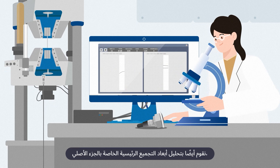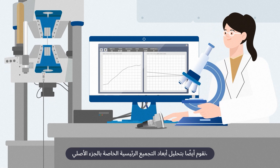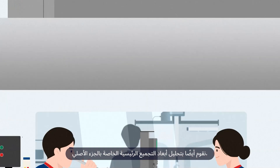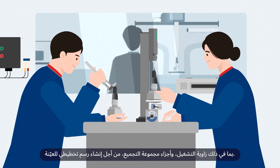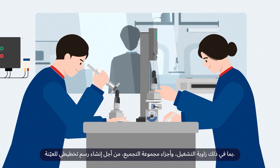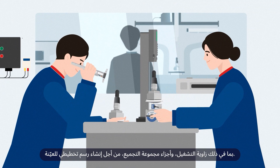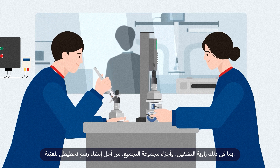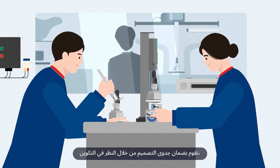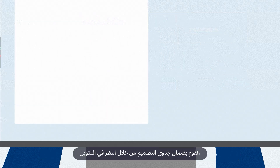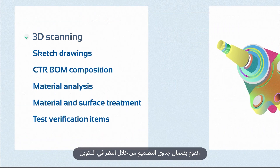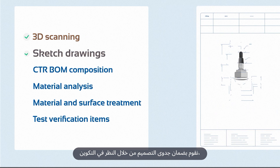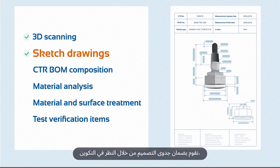We also analyze the main assembly dimensions of the genuine part, including the operating angle and the assembly kit parts, so we can make a sample sketch. Using 3D scans and sketches, we ensure the design feasibility by considering configuration, material, surface treatment, and test items.